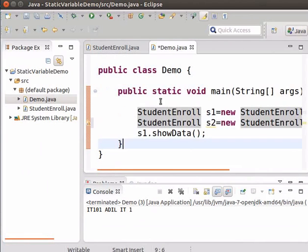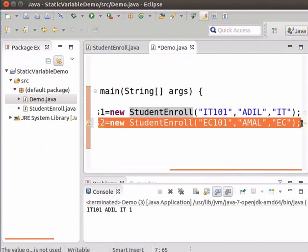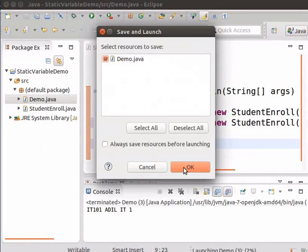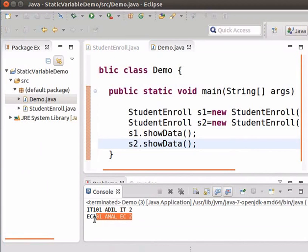Now type the following code to create one more object s2. The showData method can be called once again using s2. Again run the demo program. We can see that the values of the instance variables corresponding to s2 get printed. Also note that the value of number of student enrollments is updated to 2 for both s1 and s2.